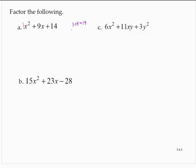I need to find a pair of numbers that multiplies to 14 and adds to 9. The pair of numbers that multiplies to 14 and adds to 9 is 2 and 7.